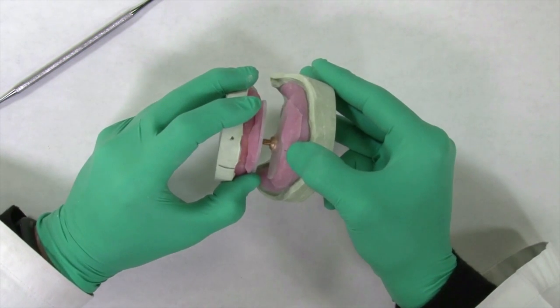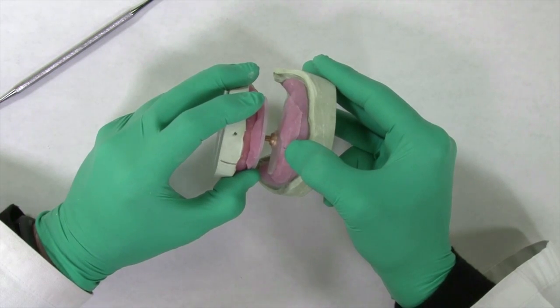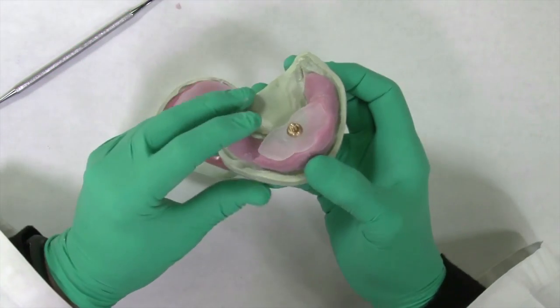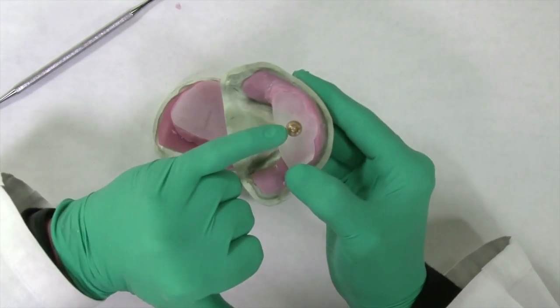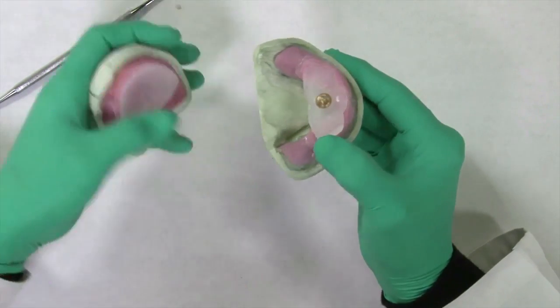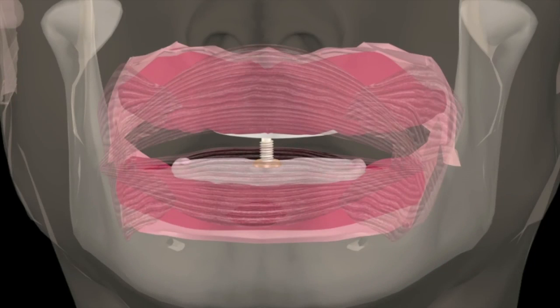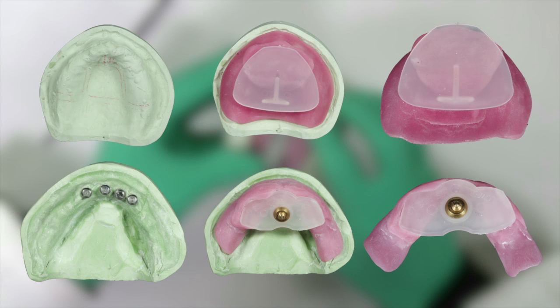If, when the bases are placed in the mouth, it is found that the vertical pin does not contact the striking plate in a perpendicular manner, the pivoting nut can be repositioned until this relationship is achieved. Shown are the steps in fabrication of jaw recorder bases in this scenario.